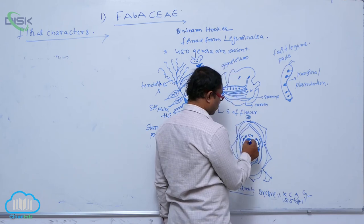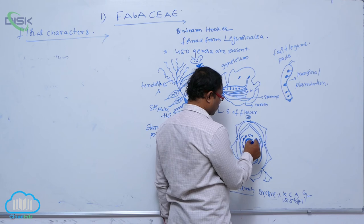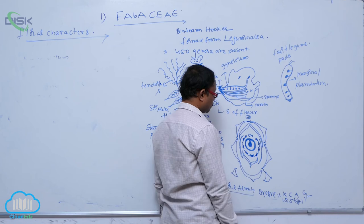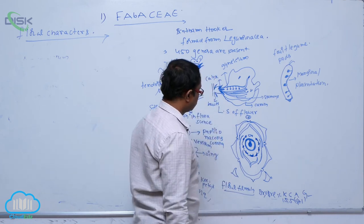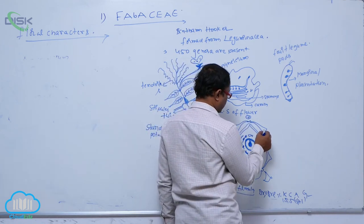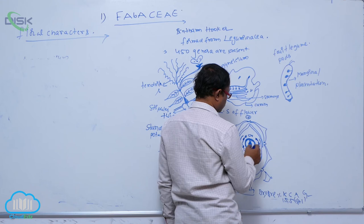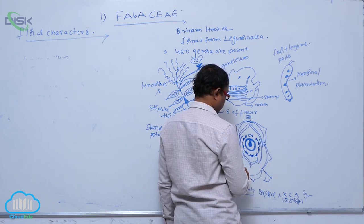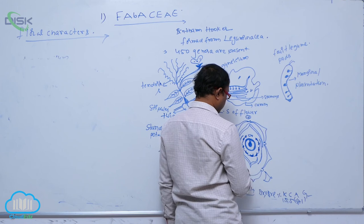After that, the gynoecium part — this is a TS of the ovary. At the margin, it is indicated as marginal placentation; carpel is singular. It is not the mother axis — calyx, corolla, androecium, and after that, gynoecium part. They are indicated on the bract.